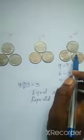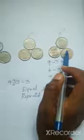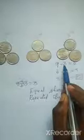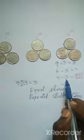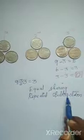So each person has 3 coins. Each person has an equal number of coins. This is equal sharing. And see here: minus 3, minus 3, minus 3. I subtract 3 repeatedly. So this is also called repeated subtraction.